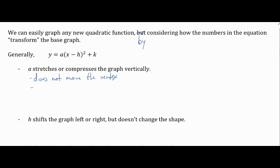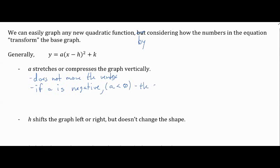I'm going to make a couple of notes — write them down so you can refer back later. If A is negative — we say A < 0 — the graph flips. That's called a reflection in the x-axis; instead of opening up it opens down. If A is small — meaning between 0 and 1, like a decimal or fraction such as one-half, one-third, one-fourth — then it compresses the graph.